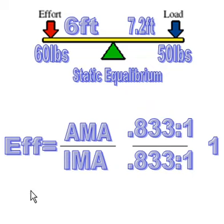So I've set it up again here. We have efficiency is equal to the actual mechanical advantage divided by the ideal mechanical advantage. And in this case, since we're in static equilibrium, we have AMA that is 0.833 to 1, and we have an IMA that is 0.833 to 1. And in this case, we have a 1 as our efficiency.